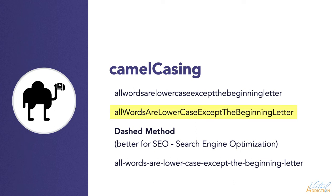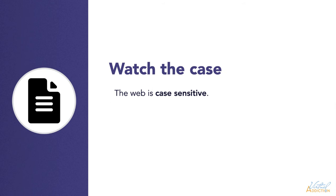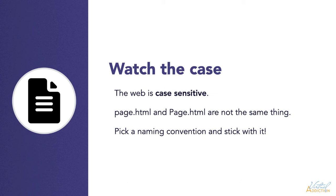I like to have camel casing as my default method because then I know right away exactly how I name the files. If you mix casing — sometimes capital letters, sometimes lowercase, sometimes dashes, sometimes underscores — then you have to remember all of that. Because the web is case sensitive, if I named my file page.html with all lowercase, and the file was actually named Page.html with an uppercase P, those are actually different pages. When I make a link or call a page, I have to refer to it with the exact same case I used when naming the file.